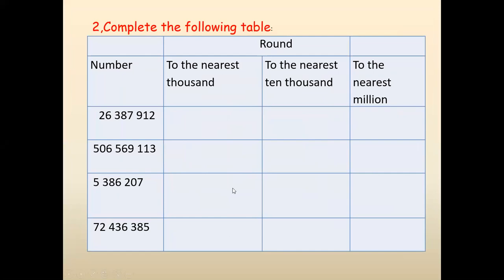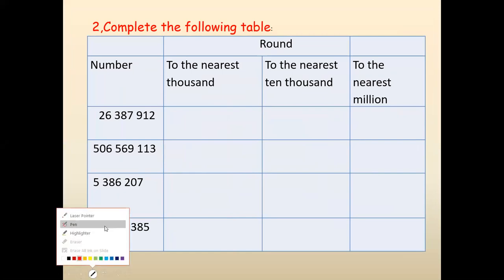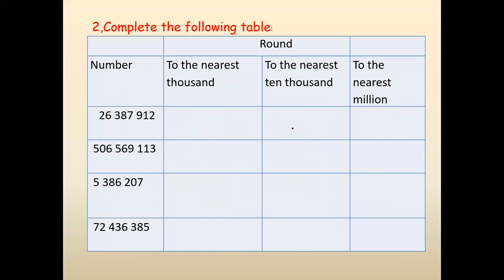Please check it on the extra sheet and correct it. Round off to the nearest thousand, ten thousand, and million — the second one. We did the first row, now the second row. Let's name the three families: ones, thousand, and million.